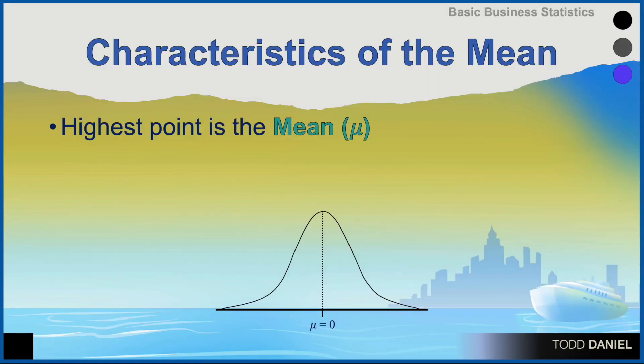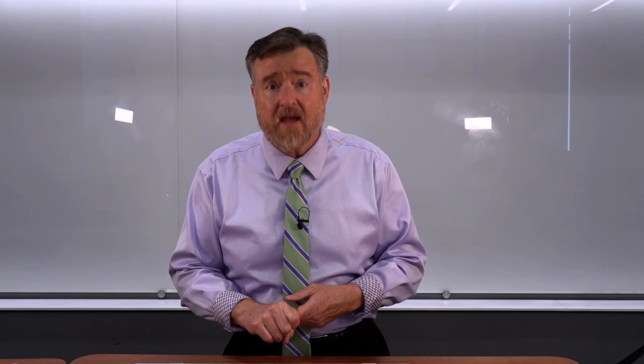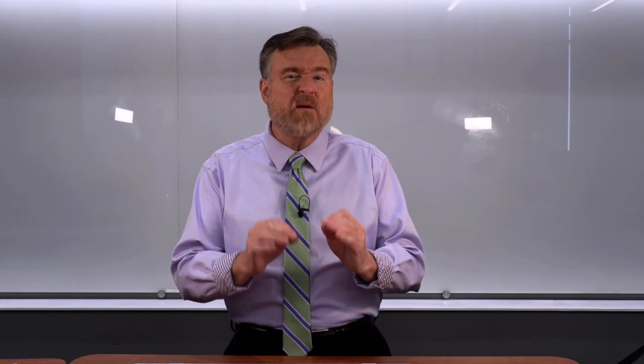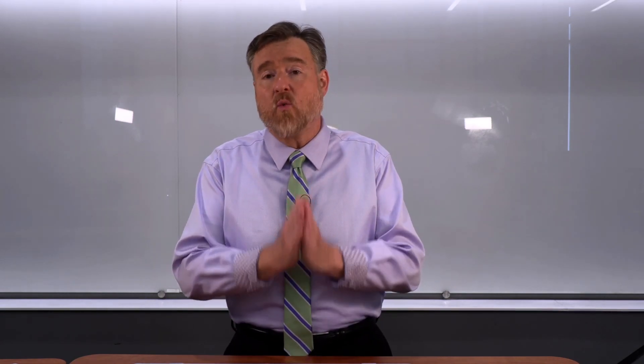The highest point — the middle of the curve — is the mean, or mu. The mean is the same as the middle score, which is the same as the most frequently occurring score. Therefore, in a normal distribution, the mean equals the median equals the mode. We can use this when examining any distribution: measure the mean, the median, and the mode, and see if they are equal. If they are — or even approximately equal — most likely you have a normal distribution. In fact, there is a hypothesis test to determine whether the mean and median deviate sufficiently to indicate a non-normal distribution.